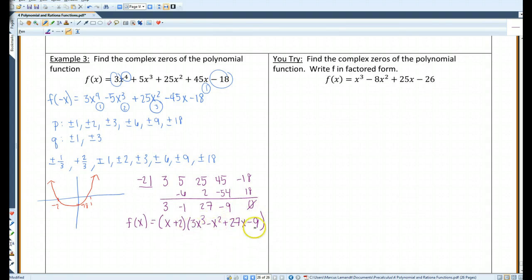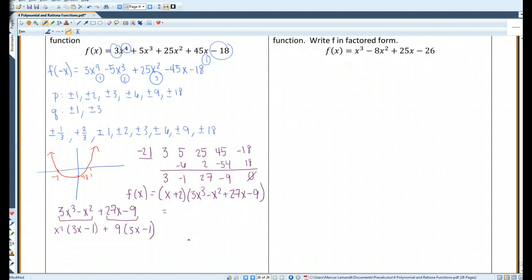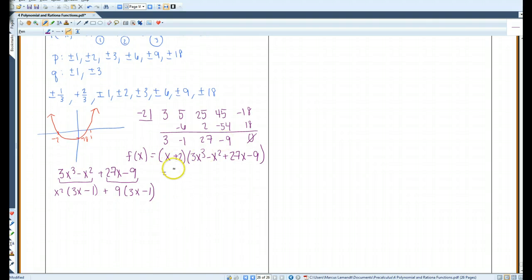So this is the depressed equation. The depressed equation can be factored by grouping. Let's take a look here. From this, I can pull out an x squared. I've got 3x minus 1. And from these, I can pull out a 9, 3x minus 1. So I can factor this again. I've got my x plus 2 out in front. And this factors into x squared plus 9 and 3x minus 1.